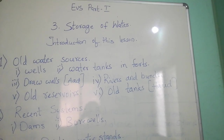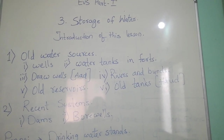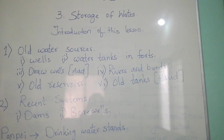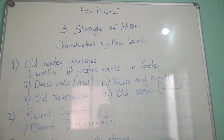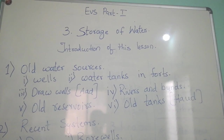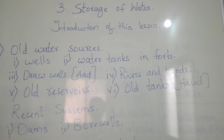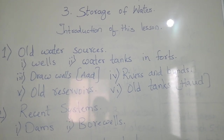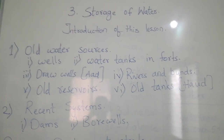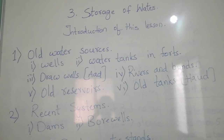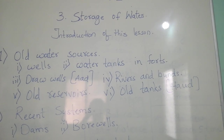The third one is draw wells. All pictures are given in your textbook, so take out your textbook and see the points. Draw wells were dug in the past to get water. In our villages, some wells are there. There were small wells from which water was drawn using a small pot. Even nowadays, in some villages, draw wells exist — they use a small pot, tie a rope, and take out the water.